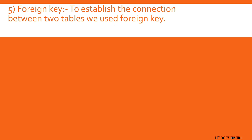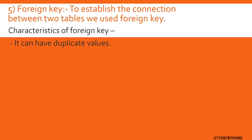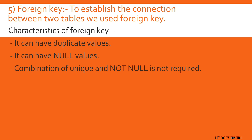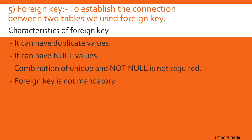Next and the last constraint is foreign key. Foreign key is used to stabilize the connection between two tables. If we have two tables in our database and we want to connect them to get records from both, we use foreign key. Characteristics of foreign key: it can have duplicate values — this is opposite to primary key. It can also have null values. A combination of unique and not null is not required. Foreign key is not mandatory; it is also optional.